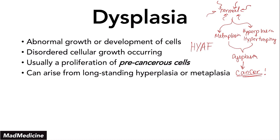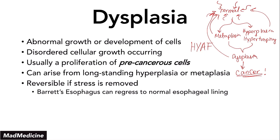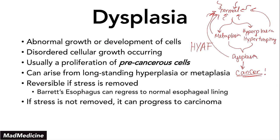This is the pathway you need to remember. From dysplasia, from metaplasia, and from hyperplasia or hypertrophy, we can go back to normal function and normal structure if the stress is removed. For example, in Barrett's esophagus, you can regress back to the normal lining. But if the stress is not removed, especially when it comes to dysplasia, it's going to progress to carcinoma, and carcinoma is irreversible. Once you progress forward, you cannot go backwards. So dysplasia can be reversed, but if the stress is not removed, you're going to see carcinoma.